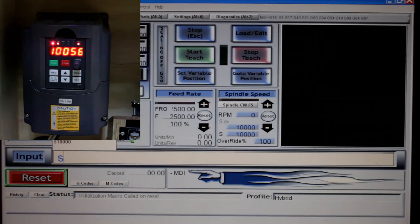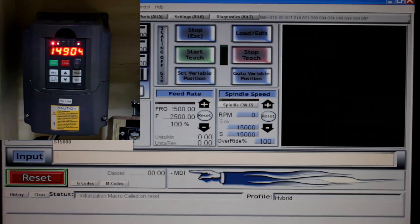And finally I'll go S 15000, which takes me up to just a little bit under 15000 rpm. If I click the spindle key again, the spindle will turn off.